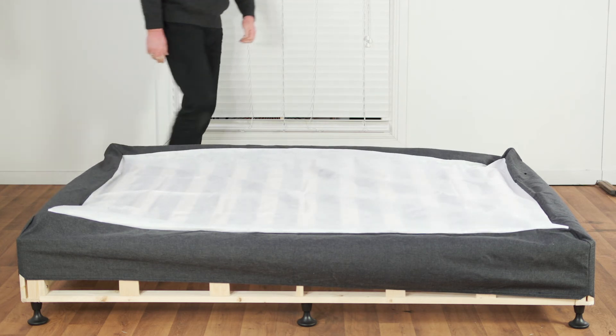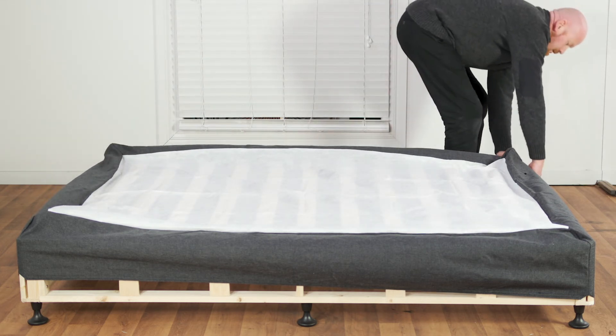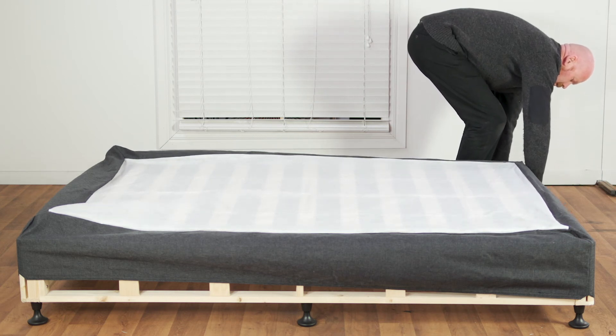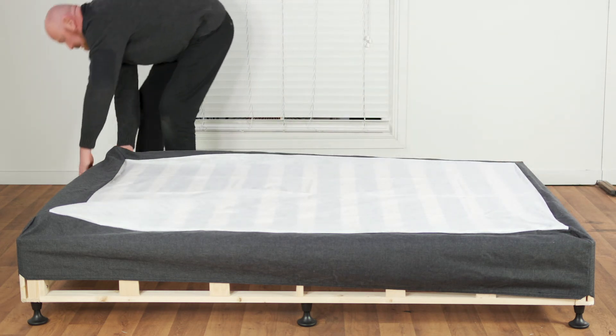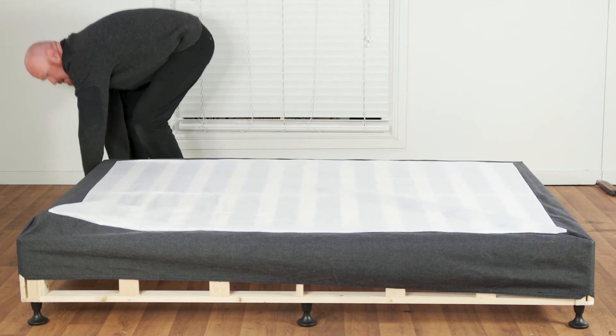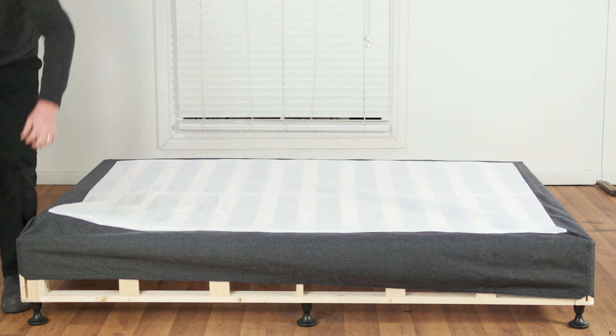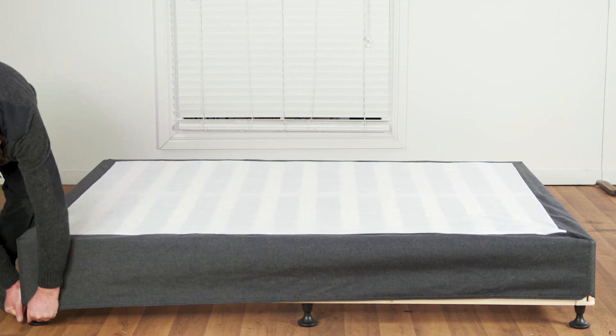From here evenly pull all four corners down to the bottom of the base. You cannot fully pull the cover down corner by corner. You need to move around the bed gently moving all corners at the same time. The white fabric centre of the cover should sit centre to the frame.